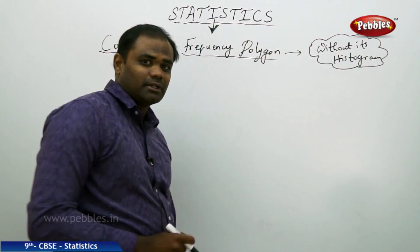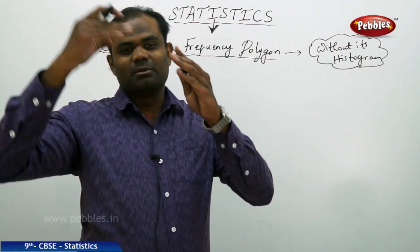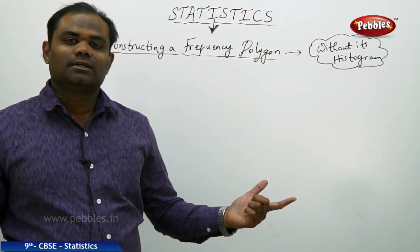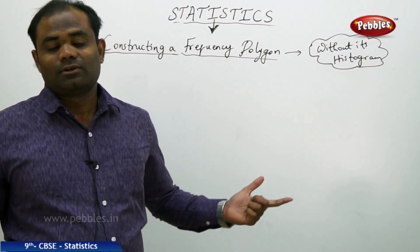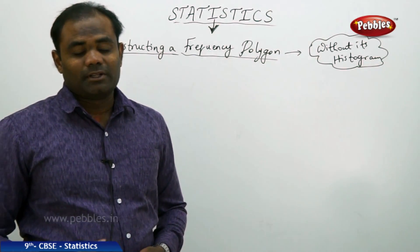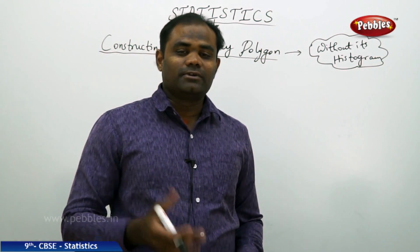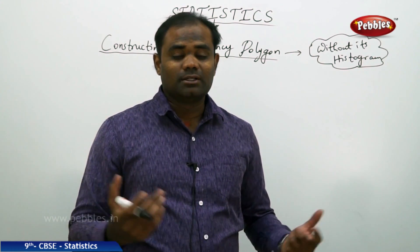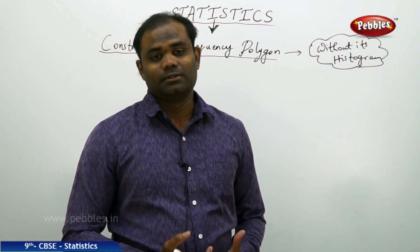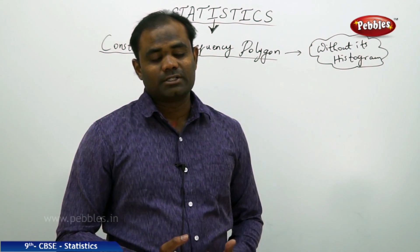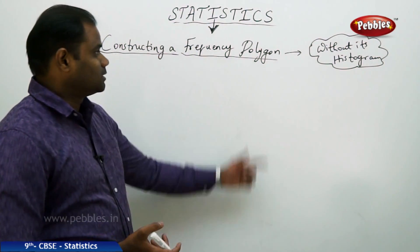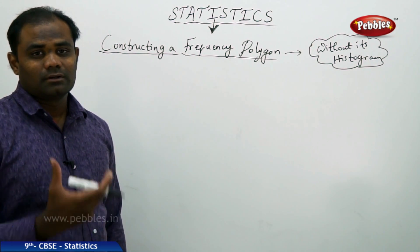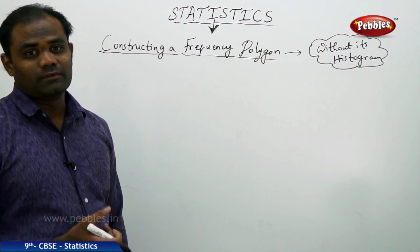If the histogram is given, it's very easy because we pick the midpoints of the top bars and just join and we get an n-sided closed figure called frequency polygon. But if the histogram is not given, it is very difficult to pick the middle points and hence we have some other method which we use out here. So let's see how we can construct a frequency polygon for a given data without the construction of the histogram.